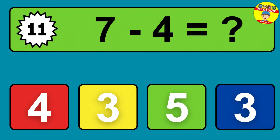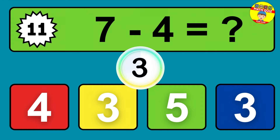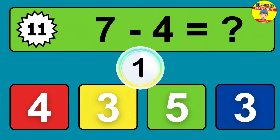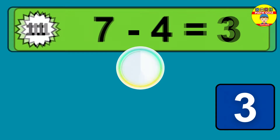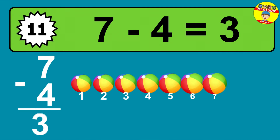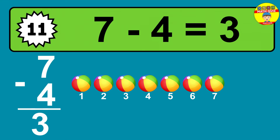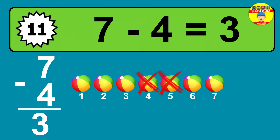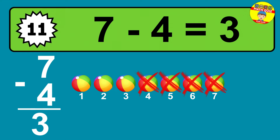Question eleven: seven minus four equals what? The answer is seven minus four is three. Let's count it: one, two, three.